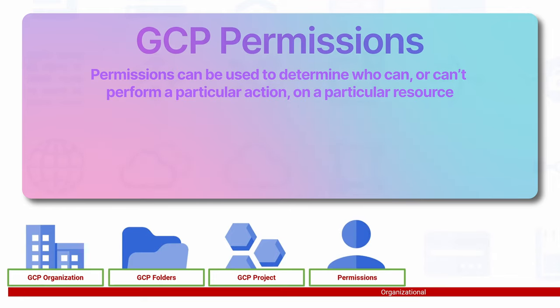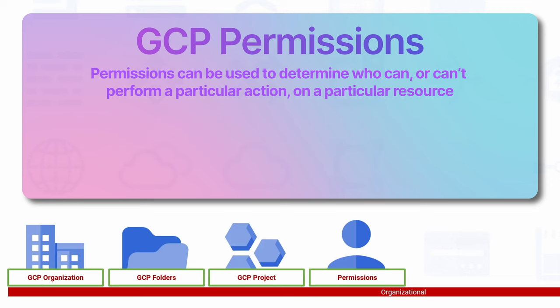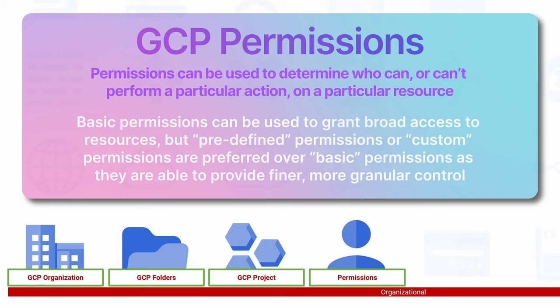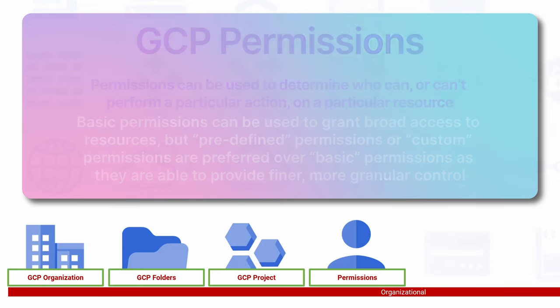Permissions can be used to determine who can or can't perform a particular action on a particular resource. Basic permissions can be used to grant broad access to resources, but predefined permissions or custom permissions are preferred over basic permissions as they are able to provide finer, more granular control.